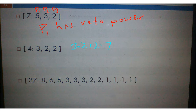The one on the bottom, 37 is the quota, and then all these numbers add up to 36.